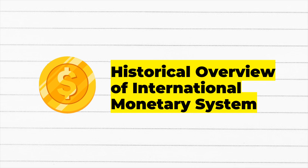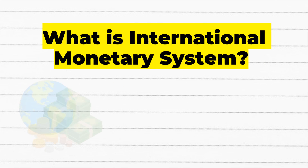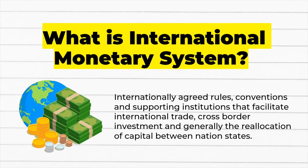Hi, today I'm going to tell you a story about the historical overview of the international monetary system. An international monetary system is a set of internationally agreed rules, conventions, and supporting institutions that facilitate international trade, cross-border investment, and generally the reallocation of capital between nation-states. It establishes the rules by which countries value and exchange their currencies, and is the basis and system of international flow of money.